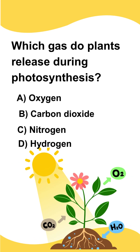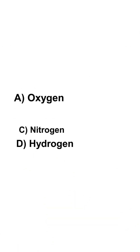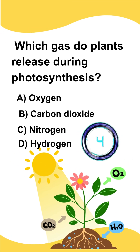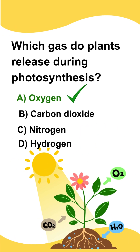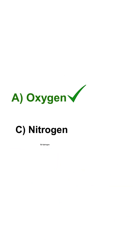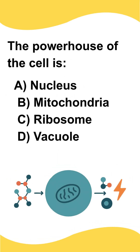Which gas do plants release during photosynthesis? A) Oxygen, B) Carbon dioxide, C) Nitrogen, D) Hydrogen. The correct answer is option A: Oxygen.